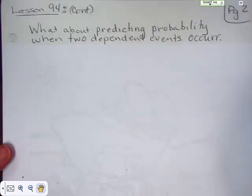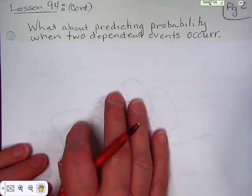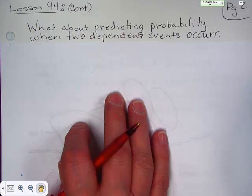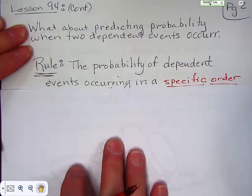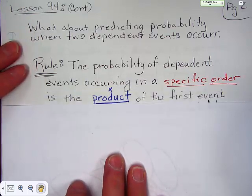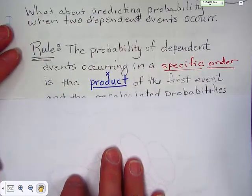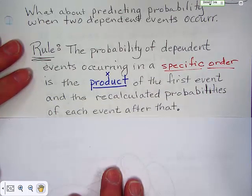What about predicting probability when two dependent events occur? So, for instance, if you have two things that happen, we'll go right here. The probability of dependent events occurring in a specific order is the product of the first event and the recalculated probabilities of each event after that.